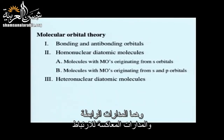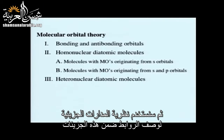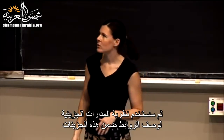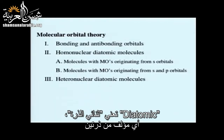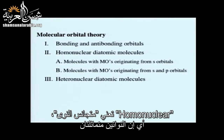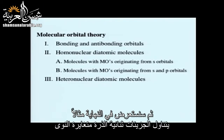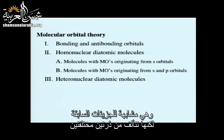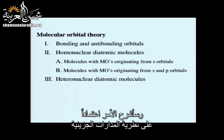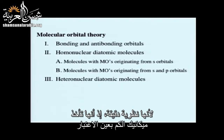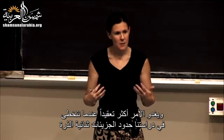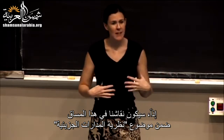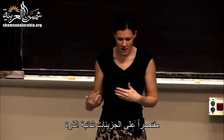Today we'll start by talking about bonding and antibonding orbitals, then use MO theory to describe bonding in homonuclear diatomic molecules — two atoms of the same element. At the end, we'll look at a heteronuclear diatomic example with two different atoms. Because MO theory rigorously takes into account quantum mechanics, it becomes complicated beyond diatomic molecules, so in 5.111 we'll limit our discussion of molecular orbital theory to diatomic molecules. On Friday, we'll use a different approach for molecules with more than two atoms.